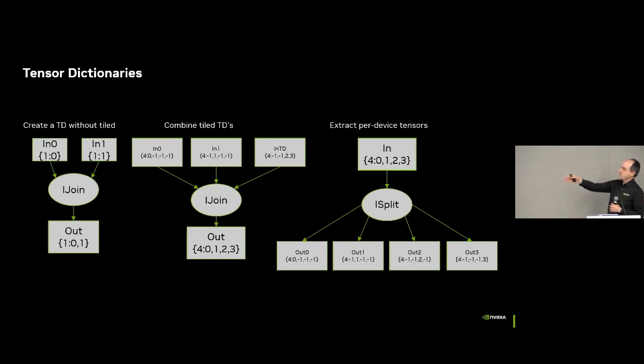An instance join op takes two tensors and creates a tensor dictionary. How it does this is the first input to instance join becomes the first instance location, the instance assignment location, and the second input to instance join becomes the second instance assignment location. On the right graph, we have the instance split. I'm taking a tensor dictionary that is tiled four ways across four instances, and I'm splitting it out into four individual tensors that are also tiled four ways. But what you'll notice here is there is a zero and then three negative ones. The negative ones means that that tile is suppressed for that tensor, or that tensor dictionary. And so what we'll have is four tensors that are tiled four ways, and they're assigned to four different instances, and you can treat these just like a normal tensor or anything else.